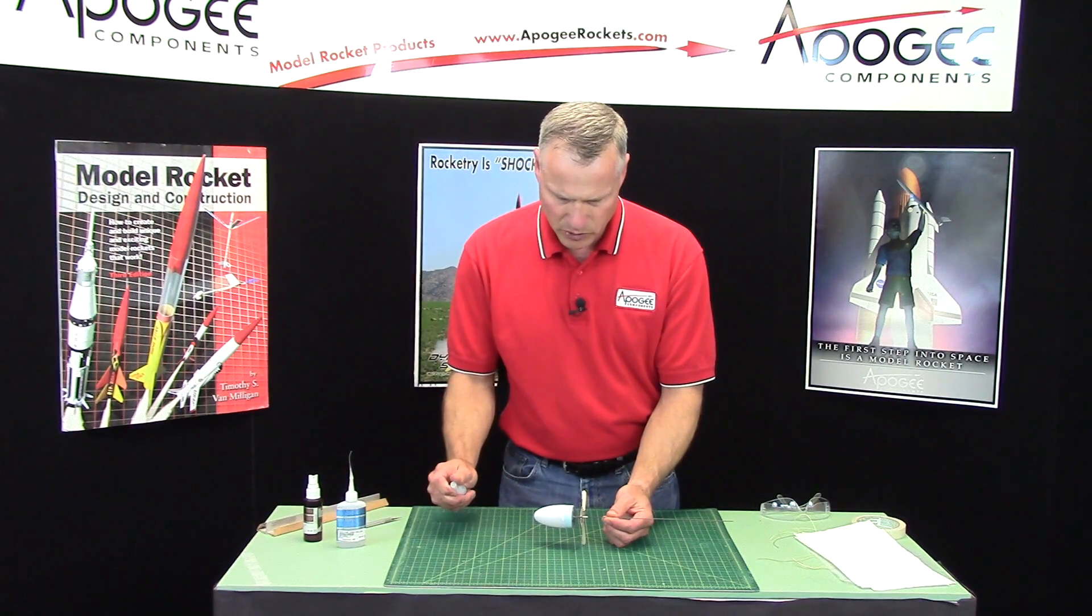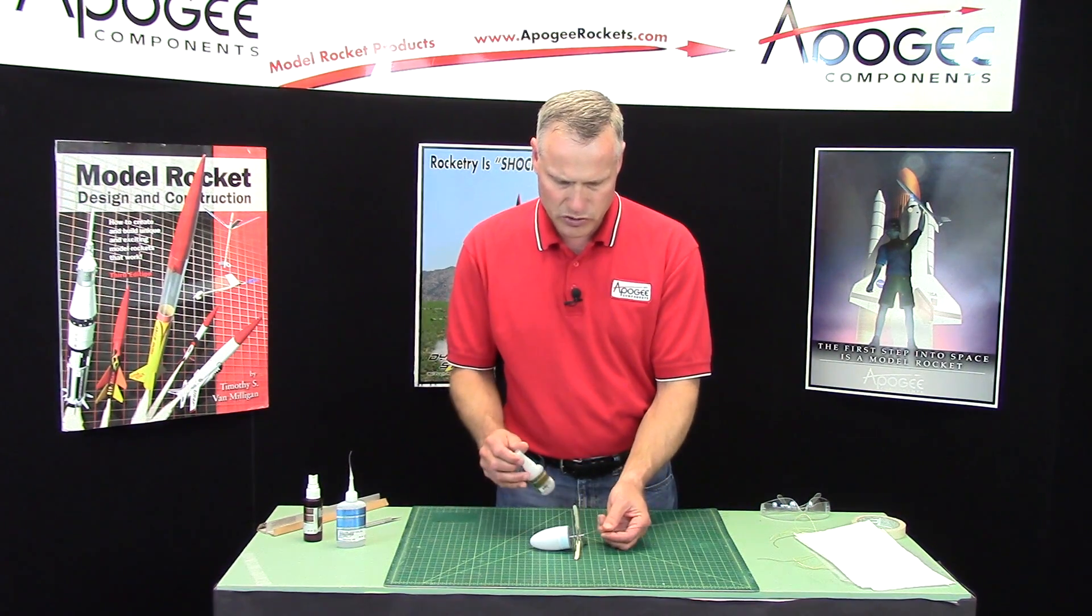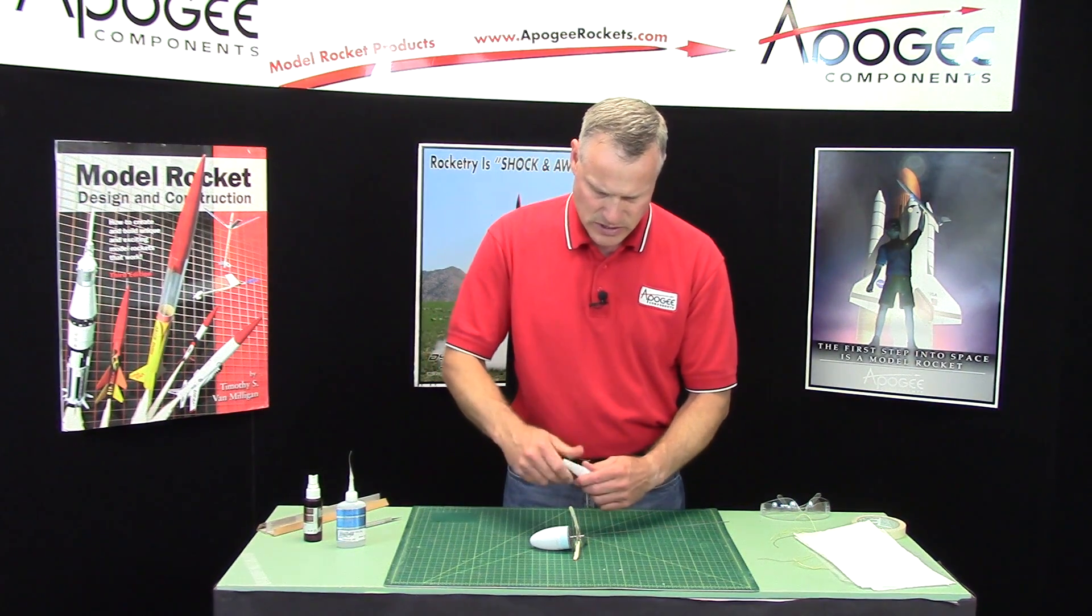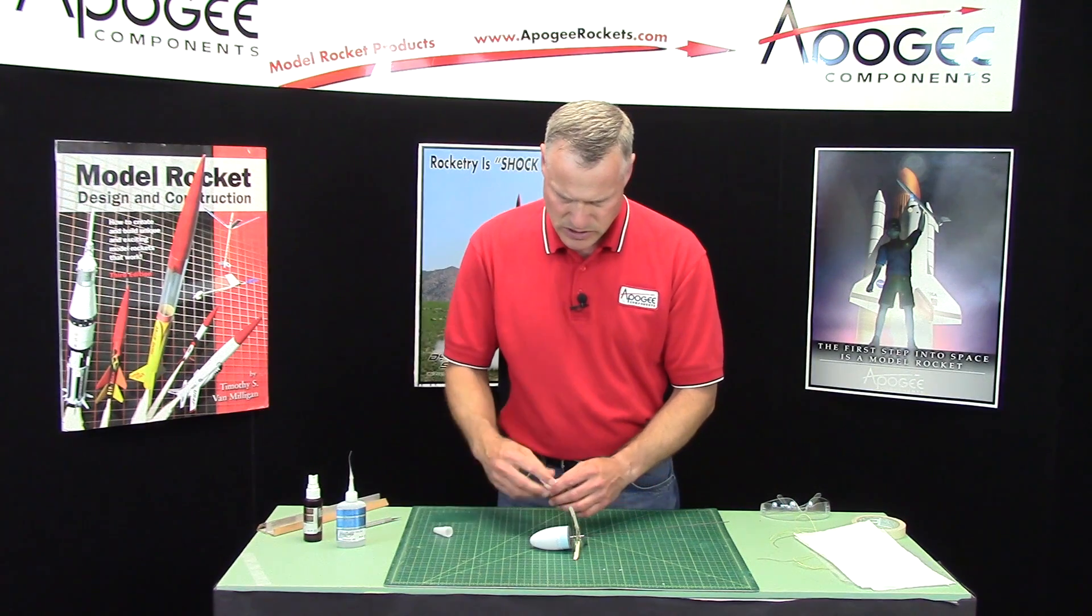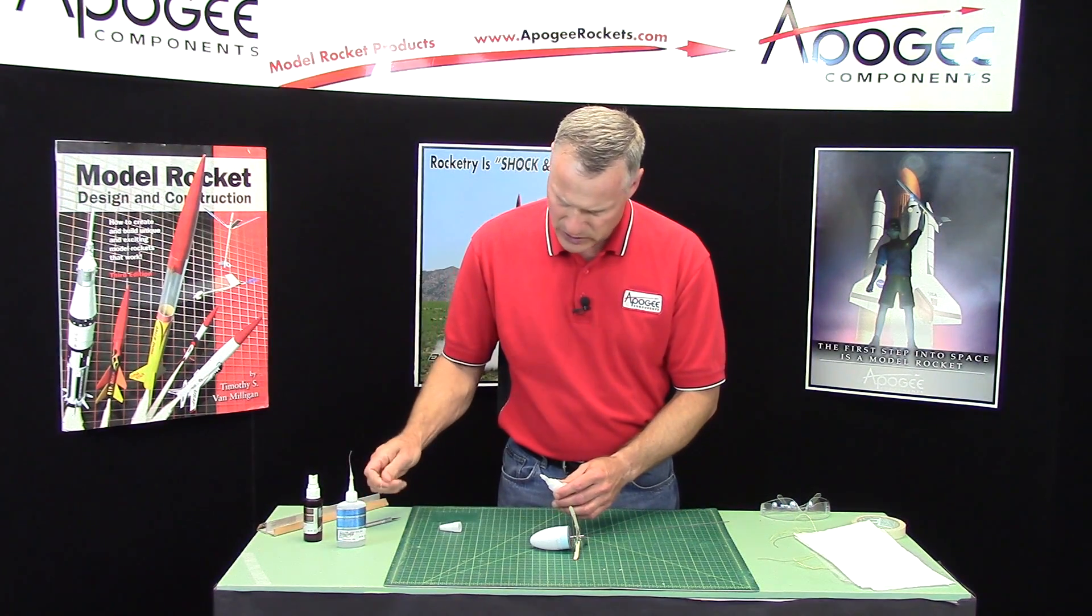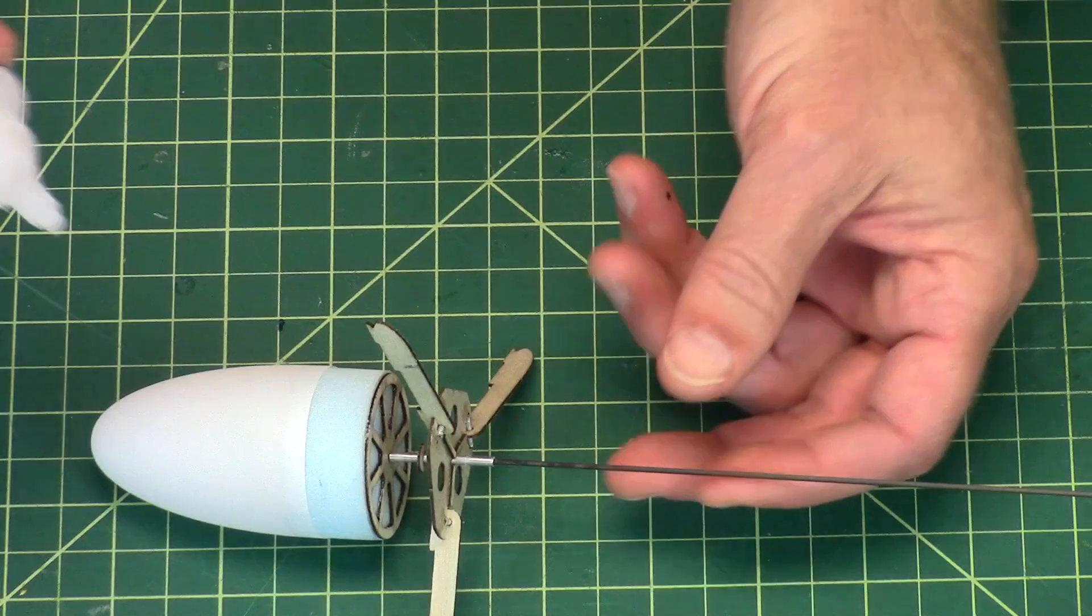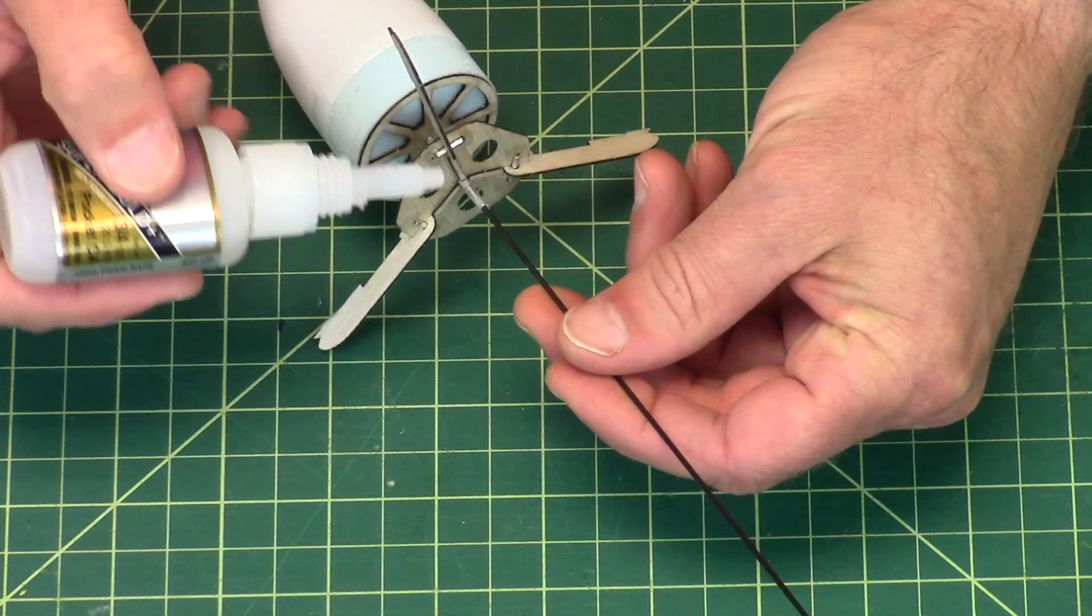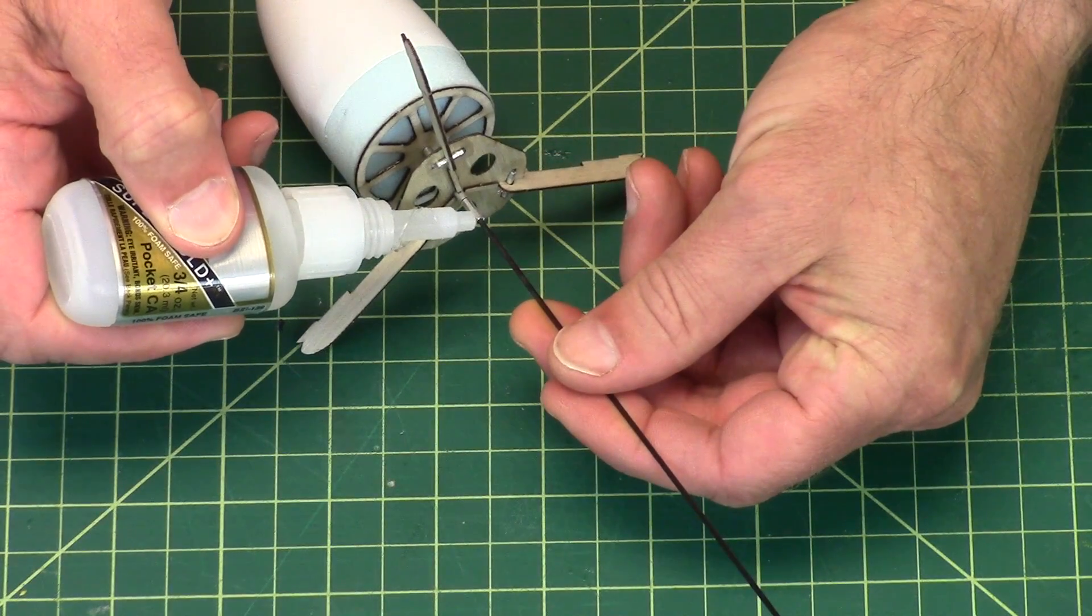I want to put just a drop, a very small drop, on the bottom. Don't let any get up near the hub because that will freeze everything up.